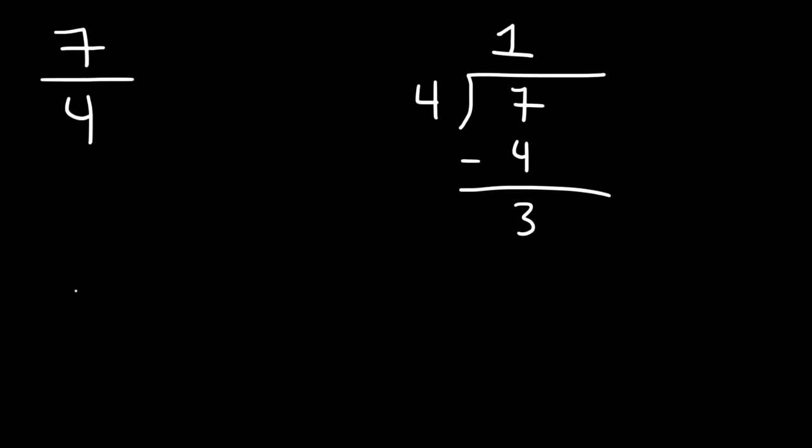So how do we take that information and write it as a mixed number? The first thing is this number - that's going to be the whole number, and so it's going to go out in front. Our remainder will be the numerator. And then the denominator will stay the same.